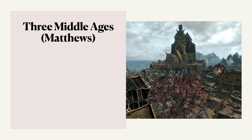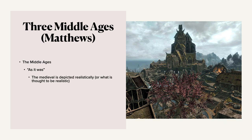I like to call this his three little middle ages — he doesn't call it that. He does talk about three middle ages, and it's a way of riffing off Eco. First is the Middle Ages as it was — this is where the medieval is depicted realistically, or what is thought to be realistic: historical novels, historical films, or documentaries. Second is the Middle Ages as it might have been — Matthews describes this as the medievalist legend, the medieval that you see in stories of King Arthur and Robin Hood and that sort of thing. And finally, the Middle Ages as it never was — this refers to fantasy works, to things like star kingdoms in outer space. He defines this as quasi, pre, parallel, or non-middle ages using medieval motifs which create a medieval appearance.